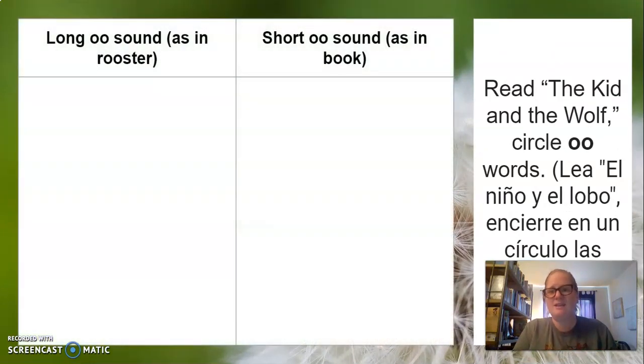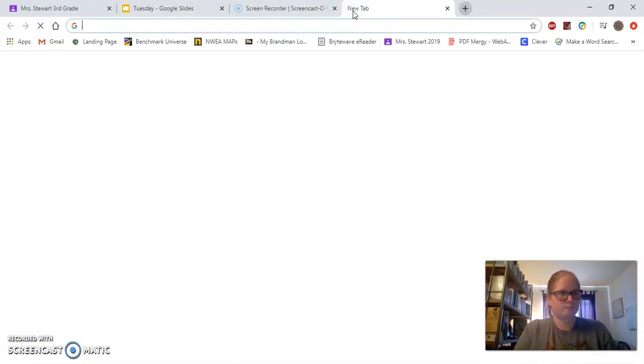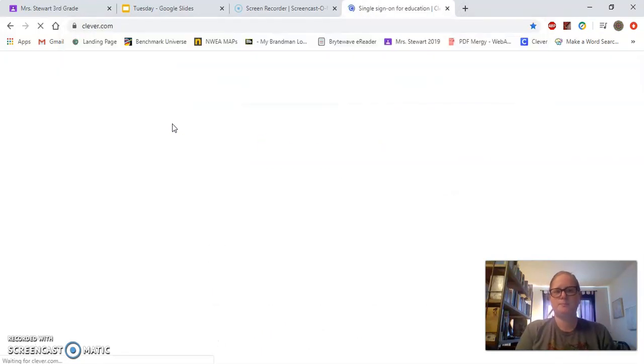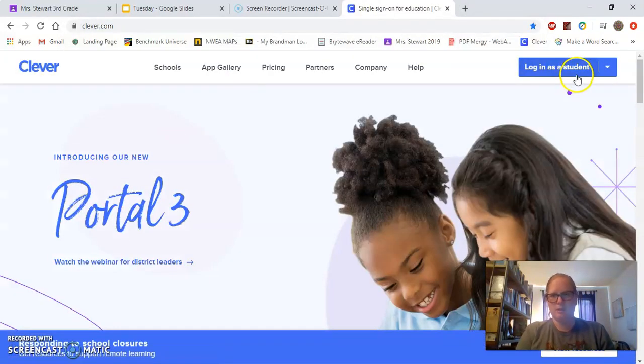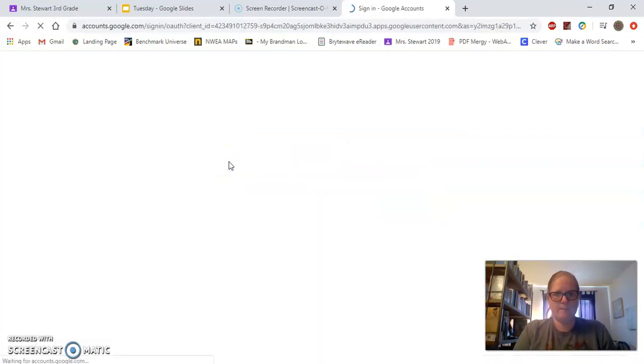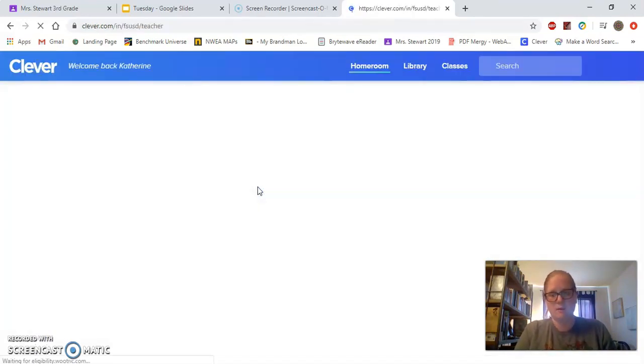Your assignment is you're going to read the kid and the wolf. You're going to circle all of the double O words. You're going to find this chart. It will be slide three in your Tuesday assignments. And you're going to list all of those double O words. Now, this is how you get to the kid and the wolf. So you're going to get onto Google, you're going to go to clever.com. You're going to log in as student. I'm going to log in as teacher because I don't think it will work if I try and log in as you guys. Log in with Google. So always use your fsusd.org email.